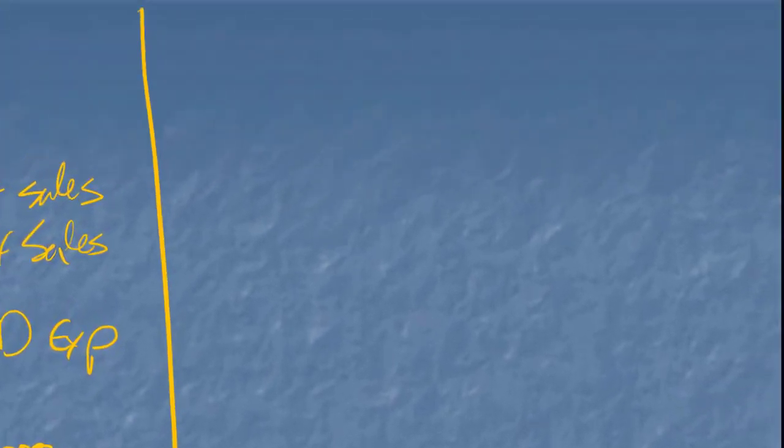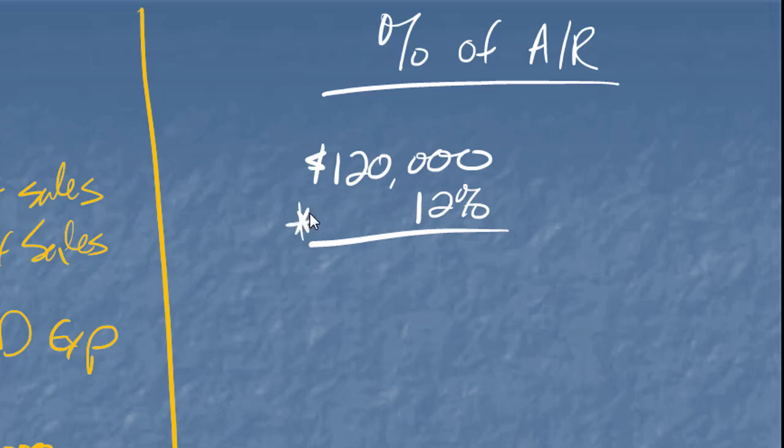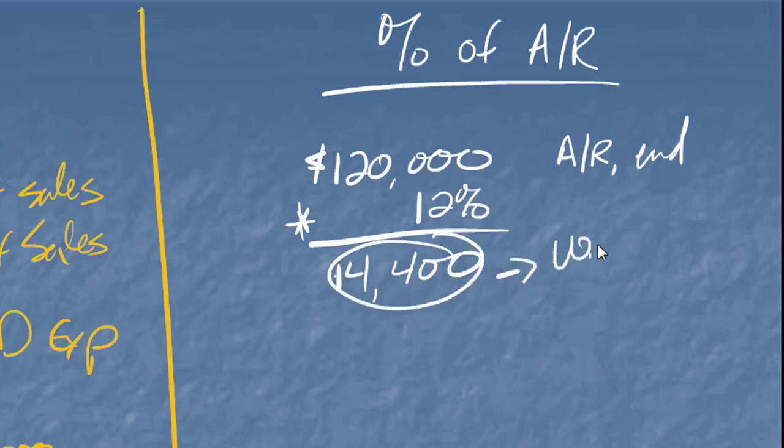Now let's take a look at the percent of account receivable method. And this method, instead of using the credit sales, I use my ending account receivable balance. So I ended with account receivable in year two of $120,000. And of those, I think 12% are going to rip me off or never going to pay me. This is my account receivable ending. So let's see, that's going to come out to $14,400. But that's not my bad debt expense. This is what I want in my bucket.